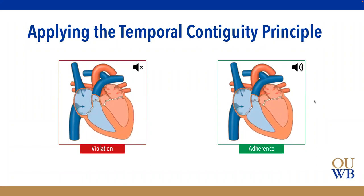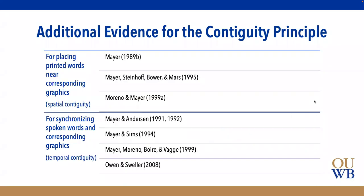There is supporting evidence for the contiguity principle across two sub-components: placing printed words near corresponding graphics — that's spatial contiguity — and synchronizing spoken words with corresponding graphics — that's temporal contiguity. A number of different studies support the use of both aspects of the contiguity principle.